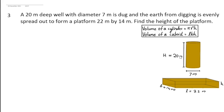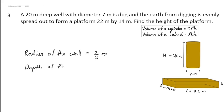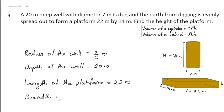This is the well from which the earth is dug out. The diameter of the well is 7 meter, so the radius of the well is 7 by 2 meter and its depth is 20 meter. The earth dug out from this well is used to make a platform nearby. That platform is in the shape of a cuboid. Its length is 22 meter and the breadth is 14 meter. The volume of this platform is equal to the volume of the earth dug out from this well, and the volume of the earth dug out is equal to the volume of this well.